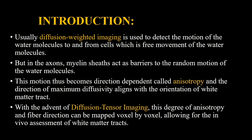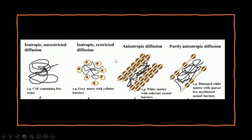The direction of maximum diffusivity aligns with the orientation of the white matter tracts. With the advent of diffusion tensor imaging, this degree of anisotropy and fiber direction can be mapped voxel by voxel, allowing for in vivo assessment of white matter tracts. Here we can see isotropic unrestricted diffusion of water molecules, which are random in direction. In isotropic restricted diffusion, there is some barrier by the cells, still not in any fixed direction.